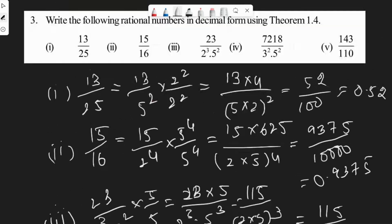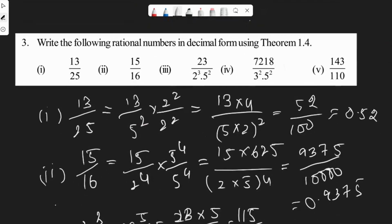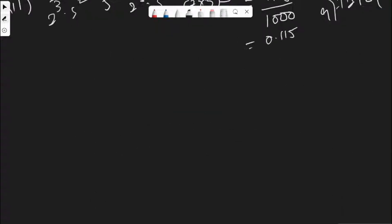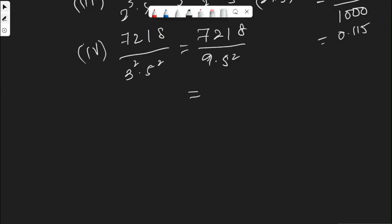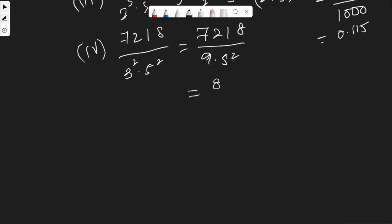Fourth one: 7218 by 3 square into 5 square. If we see, the sum of digits in 7218 is divisible by 9, which is 3 square. So 7218 by 9 into 5 square. If we divide 7218 by 9, we get 802 by 5 square. Same as above, multiply and divide with 2 square on numerator and denominator.